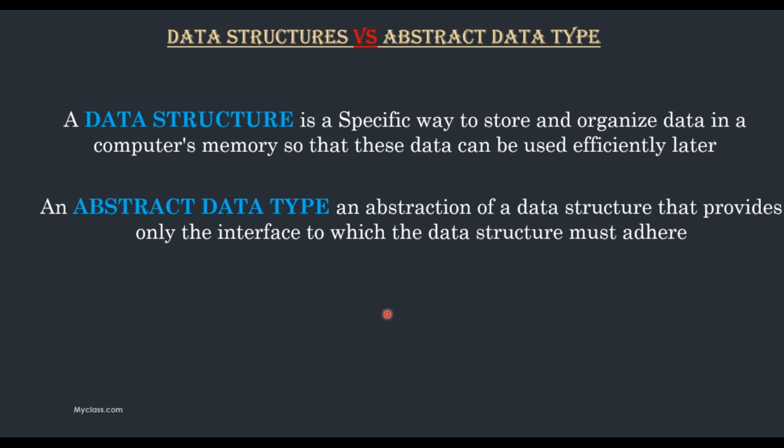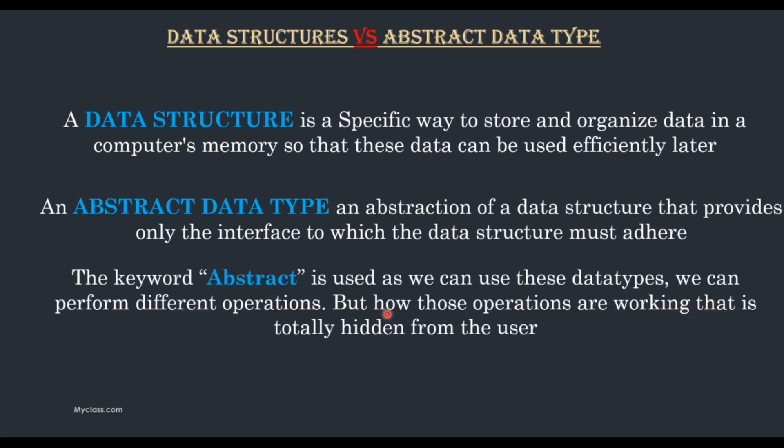An Abstract Data Type provides an interface between the user and the implementation of that operation. The keyword abstract is used as we can use these data types, we can perform different operations but how those operations are working that is totally hidden from the user.